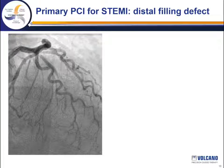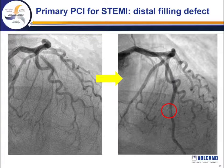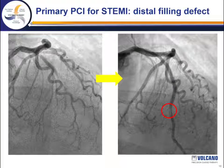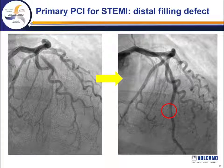Here's another case during a primary PCI for an ST-segment elevation myocardial infarction. The original picture shows the occluded mid left anterior descending. After this is opened and stented, there is a filling defect distally. Often these are just subject to another balloon dilatation or even stenting. However, IVUS can help determine the actual etiology and more appropriately guide therapy.